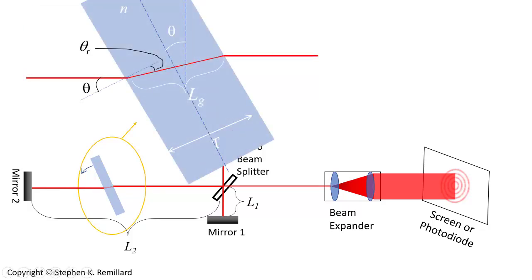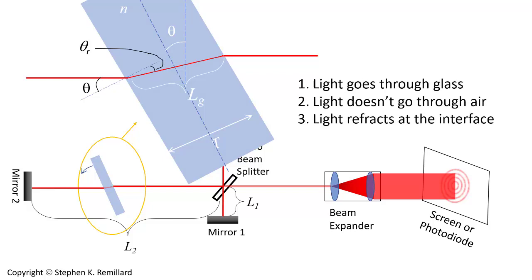Glass has a thickness, capital T. Light is incident on the glass with an angle relative to the normal of theta and then propagates through the glass the distance L sub g, length in the glass, at an angle theta sub r, the refraction angle, and then it emerges from the glass at the same angle that it entered. Three important considerations are that the light goes through the glass and while it is going through the glass, it is not going through air. So you have to subtract from the optical path length the distance it would have propagated through the air. And another important consideration is that light refracts at the interface. If you leave out any of these three important considerations, you won't get the right answer.